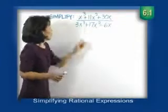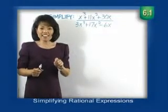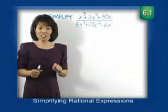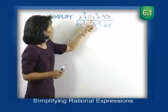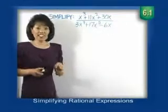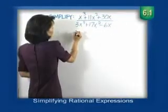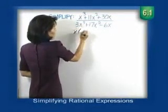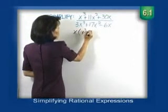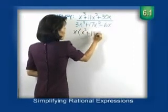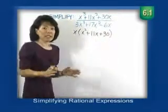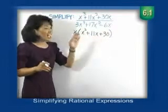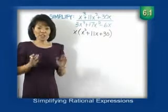We look at our numerator, and right away, don't forget the key to factoring. Look for the GCF. x cubed, x squared, x. I see a GCF of x. Inside the parentheses, that'll leave me an x squared plus 11x plus 30. I hope you recognize that this can be refactored. We're going to do that in the next step.